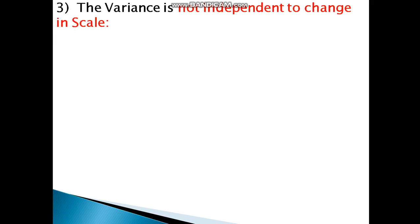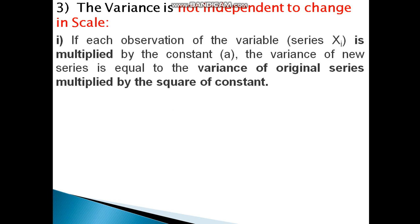However, variance is NOT independent of change of scale. When the units or scale changes — for example kilometers, weight — the variance is affected. Specifically, if xi is multiplied by a constant, the variance of the new series equals the square of the constant multiplied by the original variance.